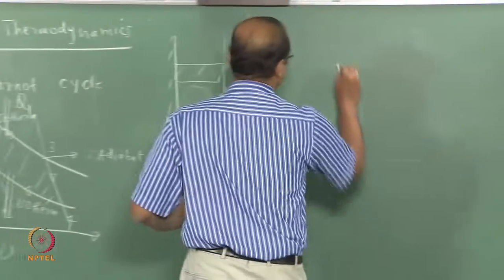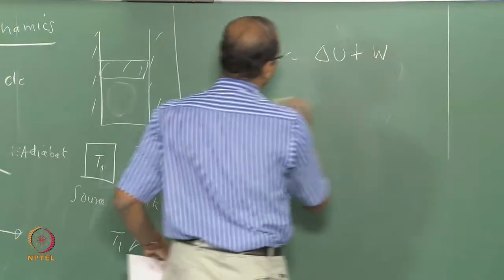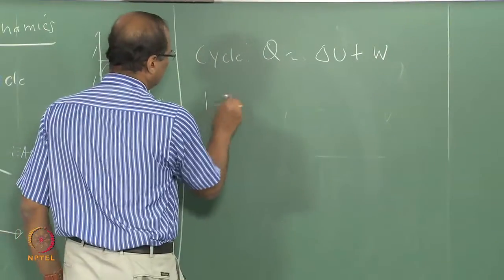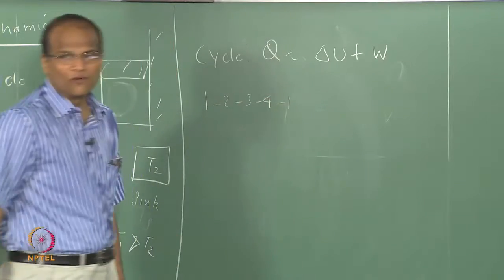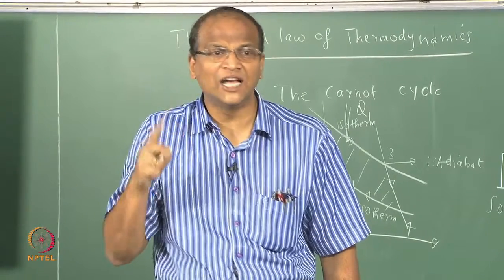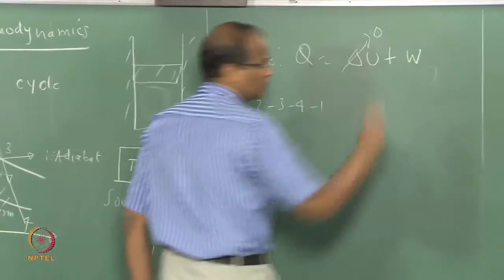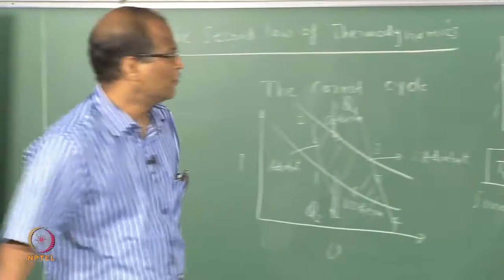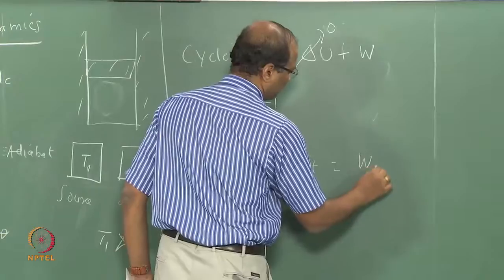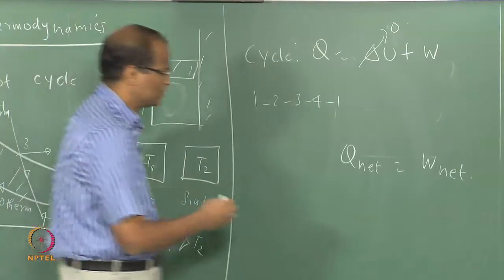The cycle is 1-2-3-4-1. You start from 1 and get back to 1. So if you start from 1 and get back to 1, what is delta U? For the cycle, Q net equals W net. What is the Q net in this cycle?